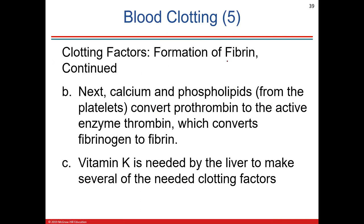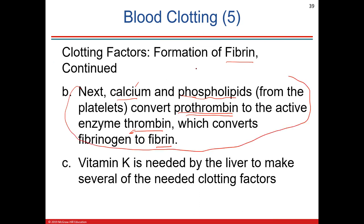Calcium and phospholipids from platelets convert prothrombin to thrombin, which converts fibrinogen to fibrin — that's the key takeaway. Another cofactor is vitamin K. People take anticoagulants like warfarin to prevent clots if they have valve problems or atrial fibrillation. Warfarin was originally rat poison and is known as Coumadin. It's a true anticoagulant because it stops the vitamin K pathway.